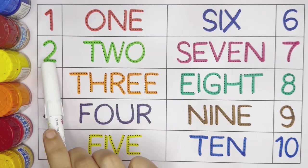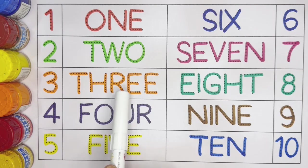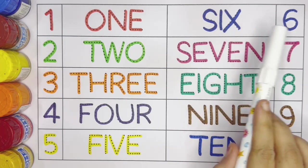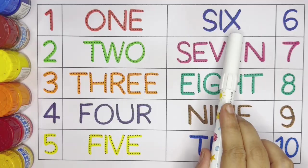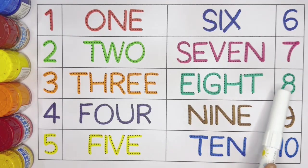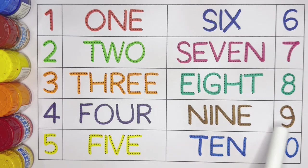1, ONE. 2, TWO. 3, THREE. 4, FOUR. 5, FIVE. 6, SIX. 7, SEVEN. 8, EIGHT. 9, NINE. 10, TEN.